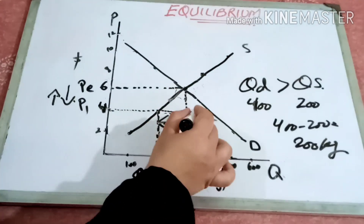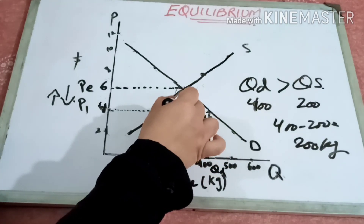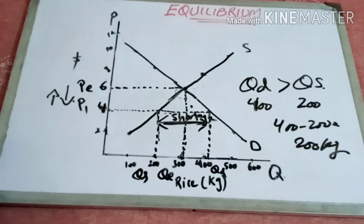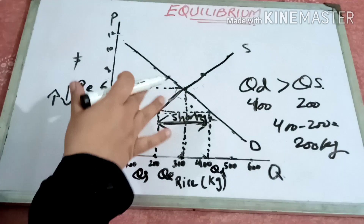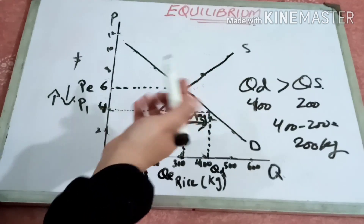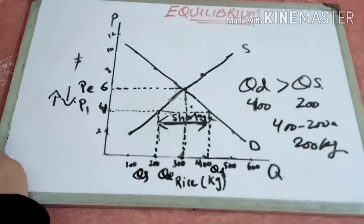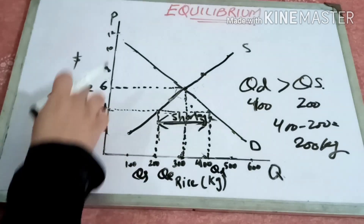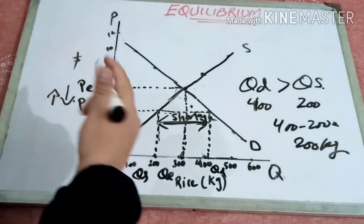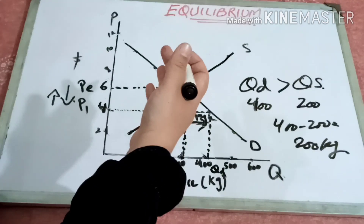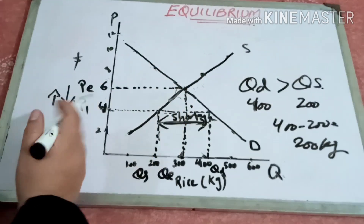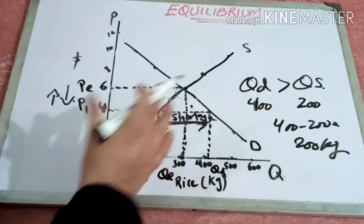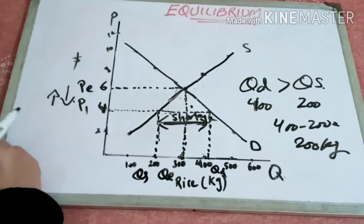At lower than the equilibrium price, consumers demand more than producers are willing to supply, so the situation is not stable. Some individuals willing to pay more than P1 will start to bid the price up, and the higher price will cause producers to supply a larger quantity. This adjustment process will continue until the equilibrium price is reached and quantity demanded equals quantity supplied.